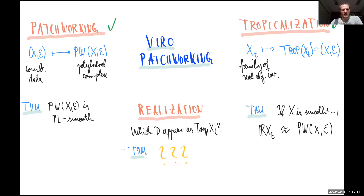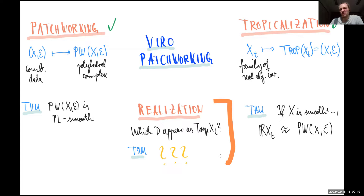To summarize: patchworking works to some extent and we can prove properties about these patchworks. Tropicalization works under smoothness conditions. The realization problem we didn't study at all — it includes the general tropical realization problem, so there is probably no general answer and it must be studied in particular cases. Let's stop here.